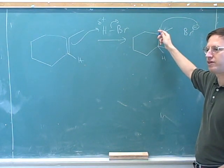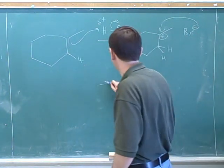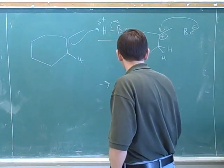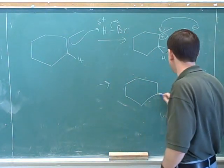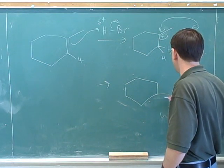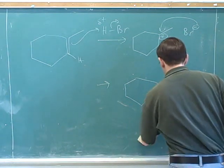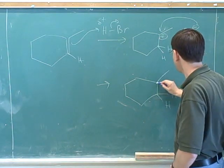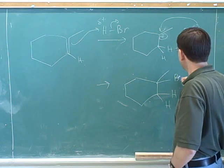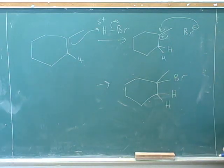So the bromine is going to attack the more substituted carbon — that's Markovnikov selectivity. Everything up to that point was outstanding; there was only one problem at the end. We always have to ask: are we forming a stereocenter? We always have to ask if we're forming a stereocenter.